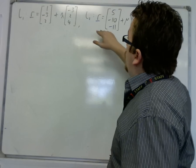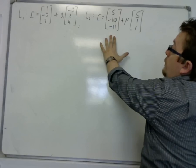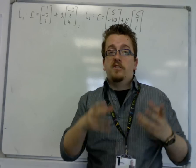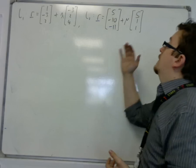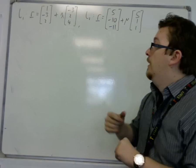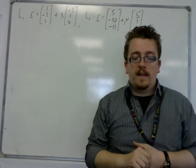Now we've got line 2, R equals 5 minus 10 minus 11, so that's the position vector, and mu lots of 5, 1, 1, that's the direction vector. So the direction vector is always the vector that comes next to the letter, the multiplier. So lambda in this case and mu in the second case.